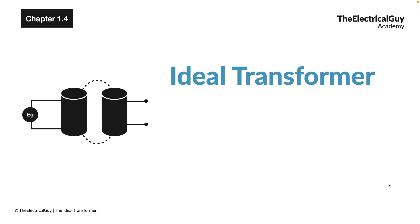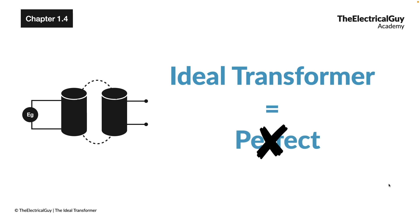When we say ideal transformer, it means it's a perfect transformer. But as we know, perfect things do not exist. Therefore, the ideal transformer also does not exist practically. And if the ideal transformer does not exist, what's the point in studying their properties?